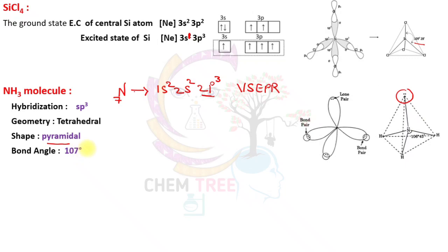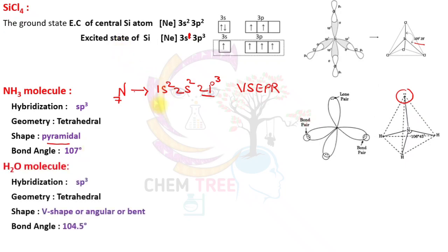In the NH₃ molecule, the geometry is tetrahedral but the shape is pyramidal with bond angle 107°. Similarly, in the water molecule, the geometry is tetrahedral but the shape is V-shaped (angular/bent). The bond angle decreases from 109° to 104.5° due to the presence of two lone pairs of electrons.